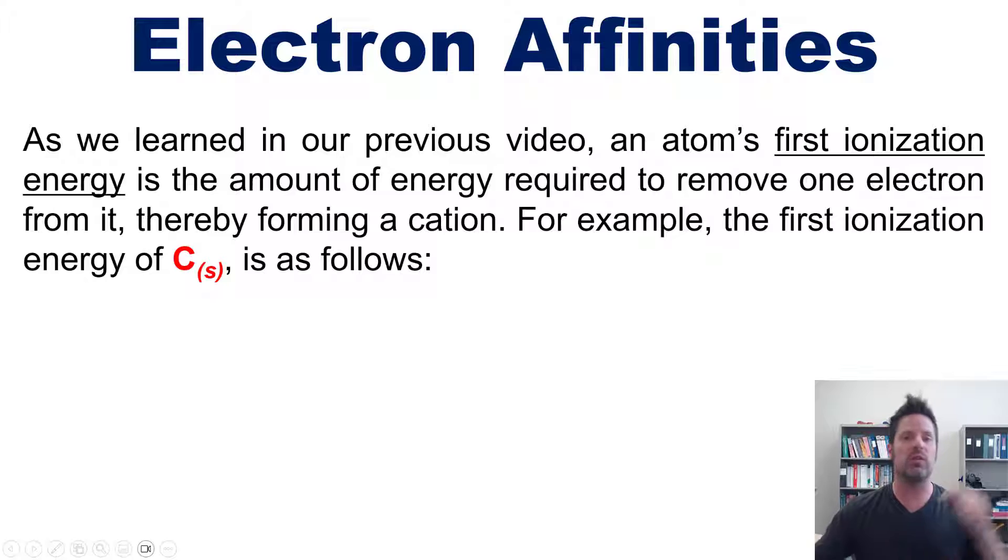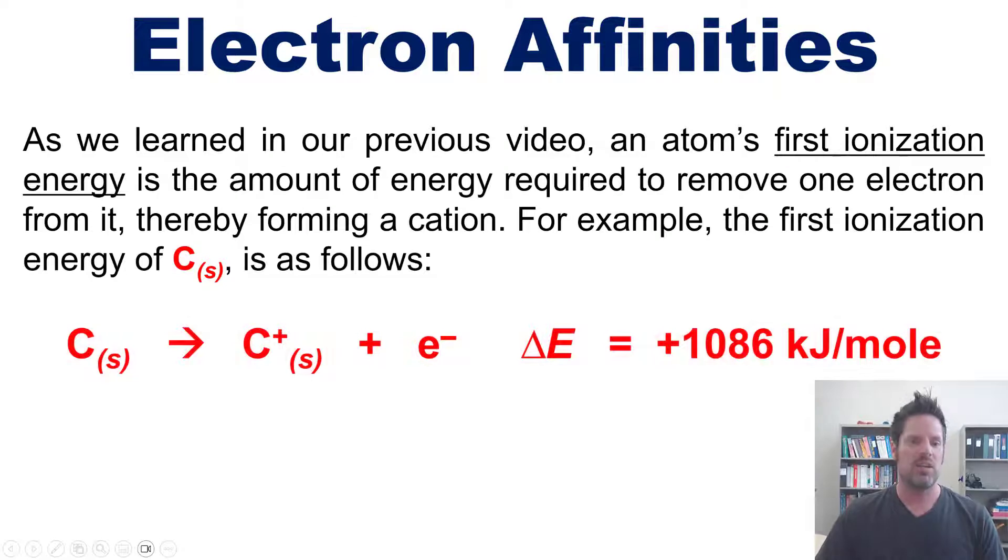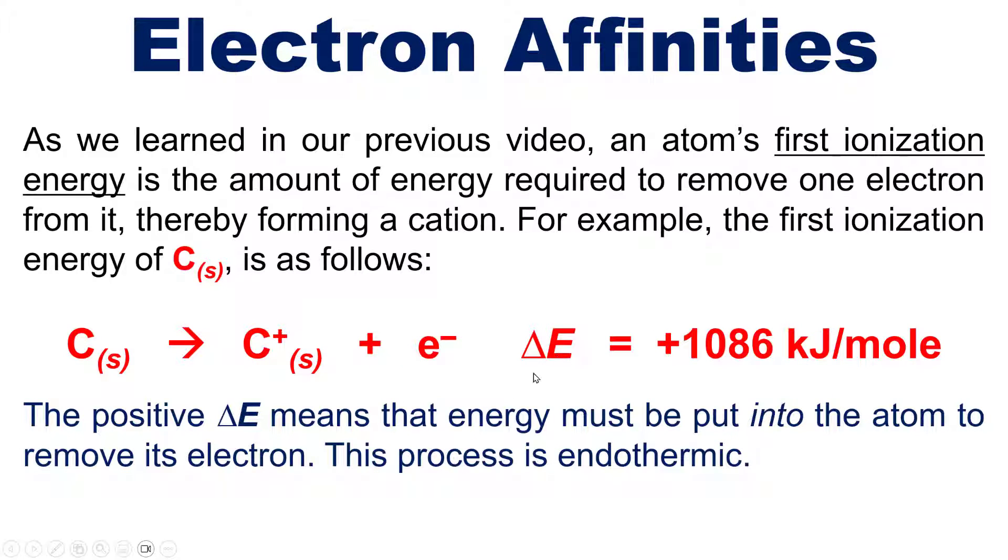As we learned in our previous video, an atom's first ionization energy is the amount of energy required to remove one electron from it, thereby forming a cation, that is a positively charged atom. For example, the first ionization energy of solid carbon atoms is summarized in this chemical equation. The positive delta E means that energy must be put into this system to extract an electron as a product away from a neutral carbon atom and thereby form a carbocation. This process then is endothermic.